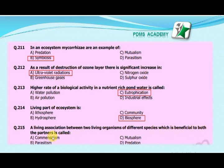Our next MCQ is: A living association between two organisms of different species which is beneficial to both partners is called — A. Commensalism, B. Parasitism, C. Mutualism, D. Predation. The correct answer is C. Mutualism.